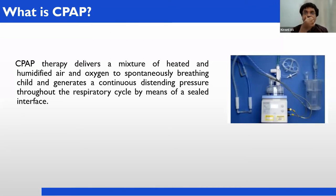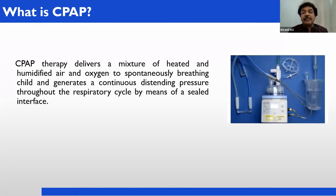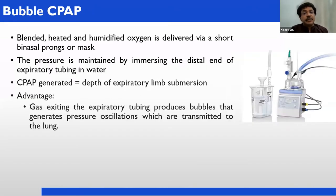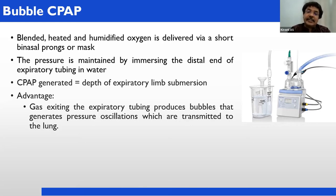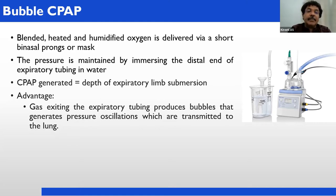Continuous positive airway pressure delivers a mixture of heated, humidified air and oxygen to the spontaneously breathing child and generates a continuous distending pressure throughout the respiratory cycle by means of a sealed interface. Sealed interface means there must be some mediator between the machine and the baby — that is nasal prongs. It is blended — a mixture of oxygen and air, heated, and given with 100% relative humidification. In delivery, we use short binasal prongs as the interface, or sometimes a nasal mask.